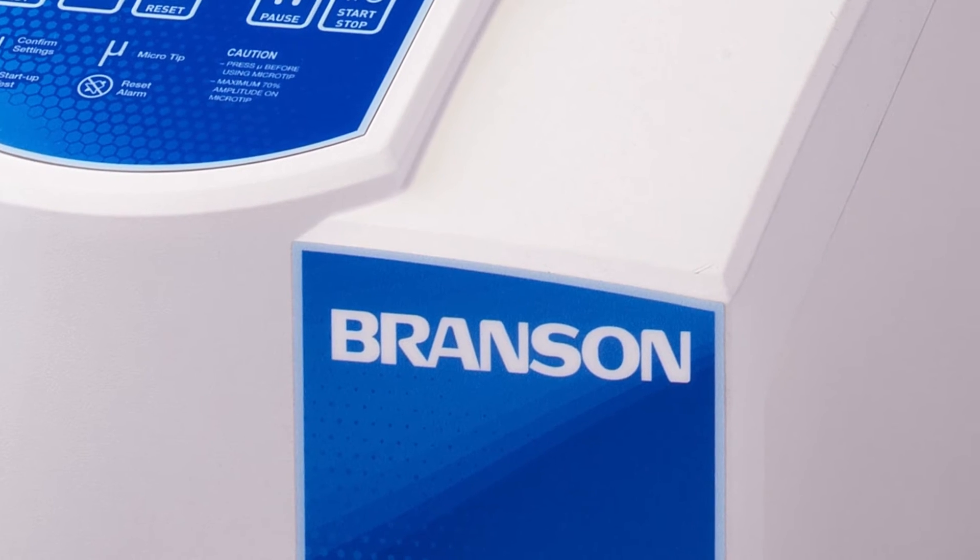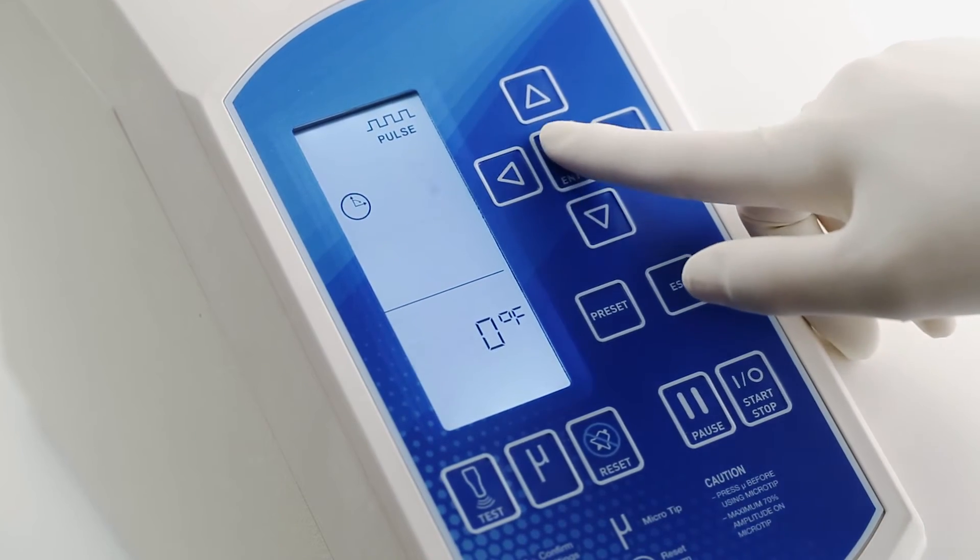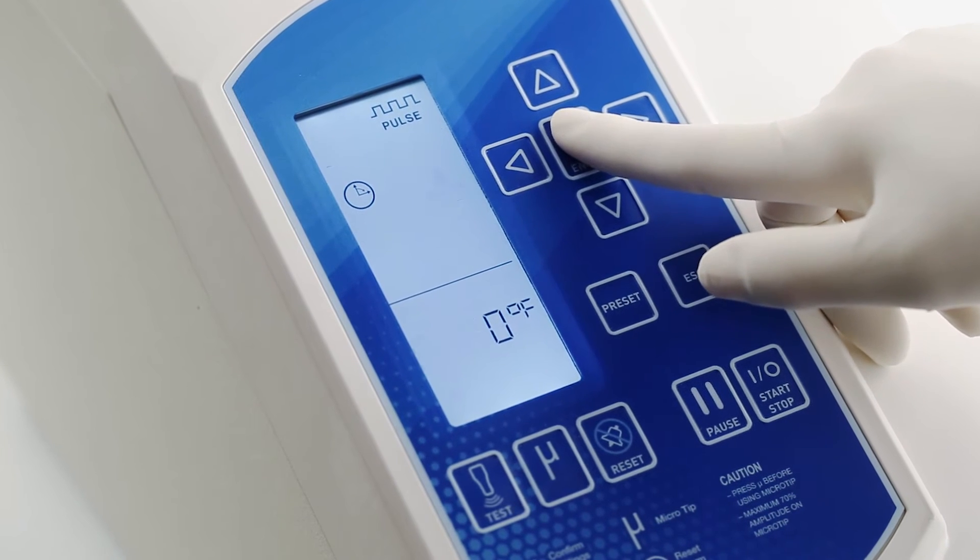And you can specify a temperature range for processing your sample. Once the lower temperature limit is reached, Branson's True Temperature Control automatically modulates the pulse to prevent the sample from exceeding the maximum limit.